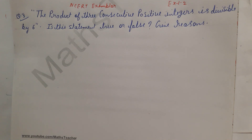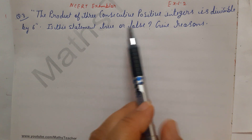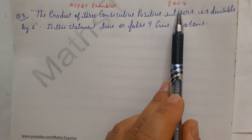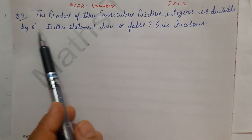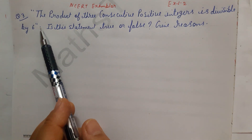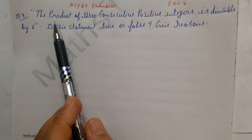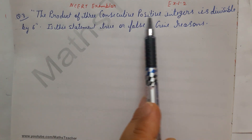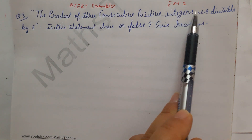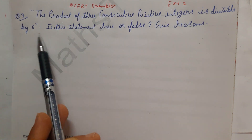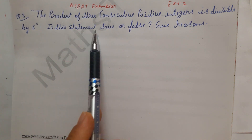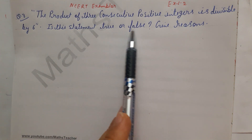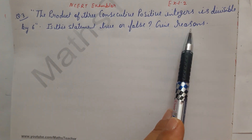Hello viewers, welcome to my channel. I am Reshmi, a Maths teacher. In this video we are solving NCERT Exemplar Book exercise 1.2 question number 3. The question is: the product of 3 consecutive positive integers is divisible by 6 — is this statement true or false? Give reasons.